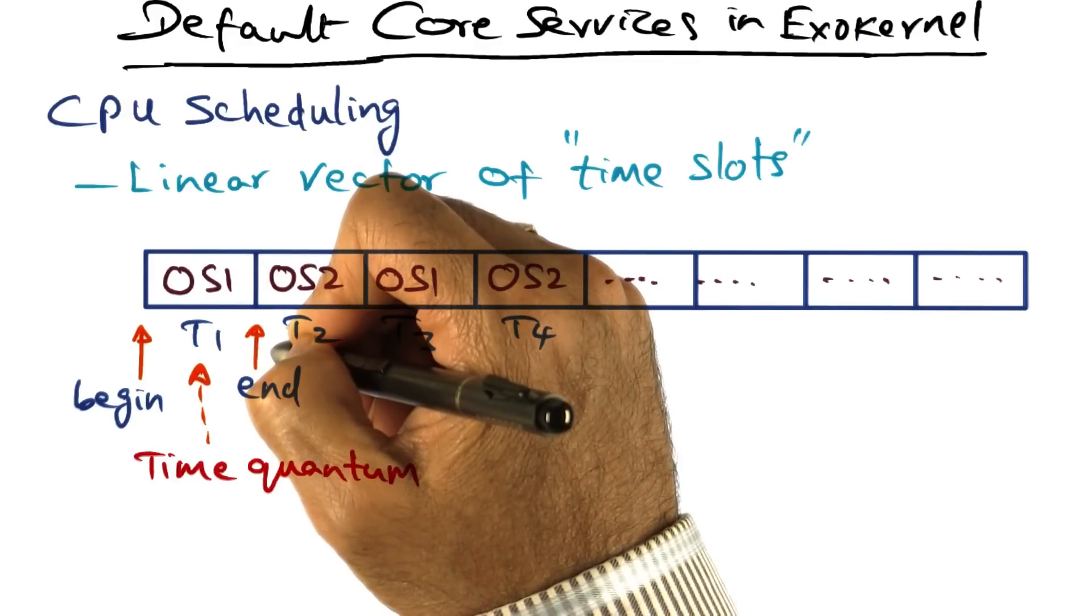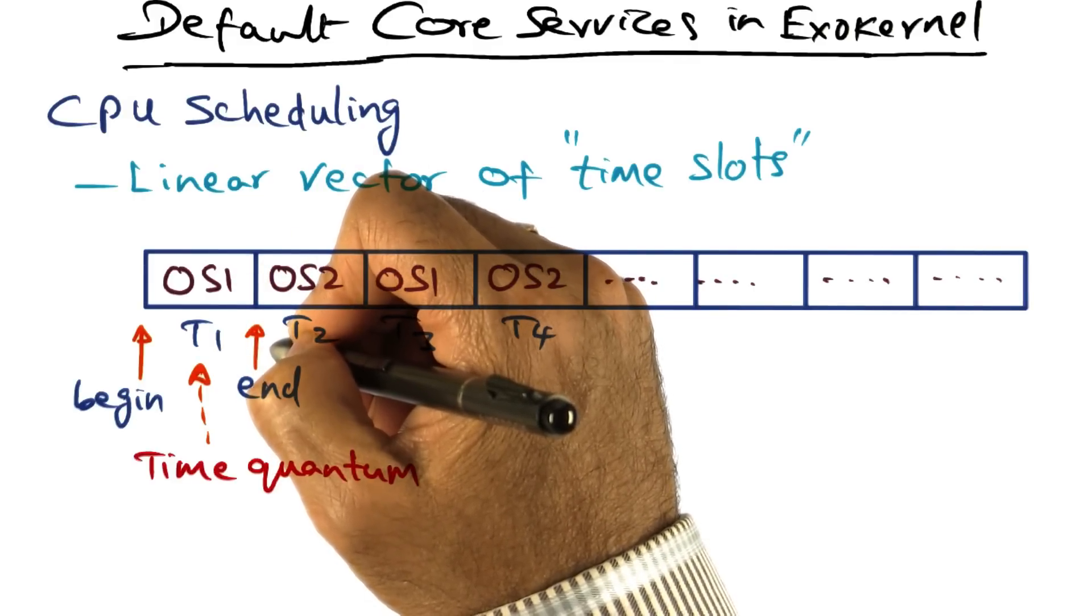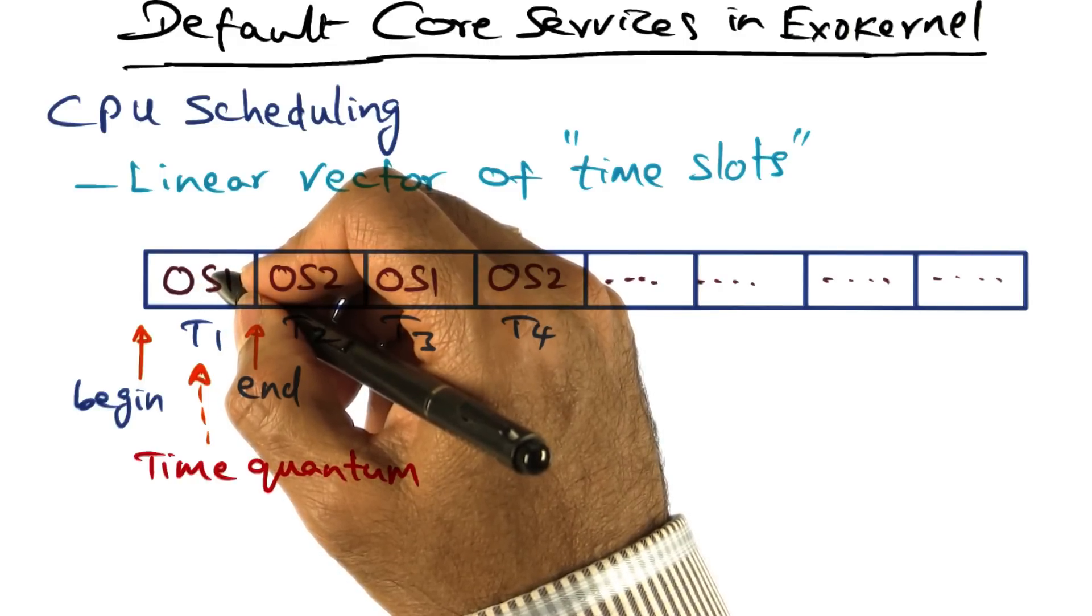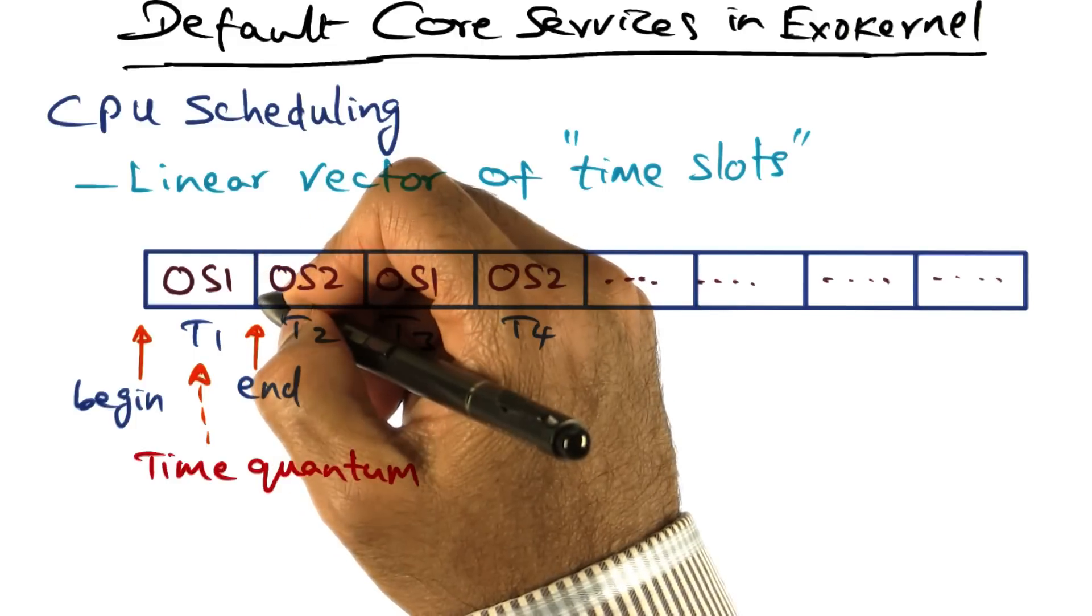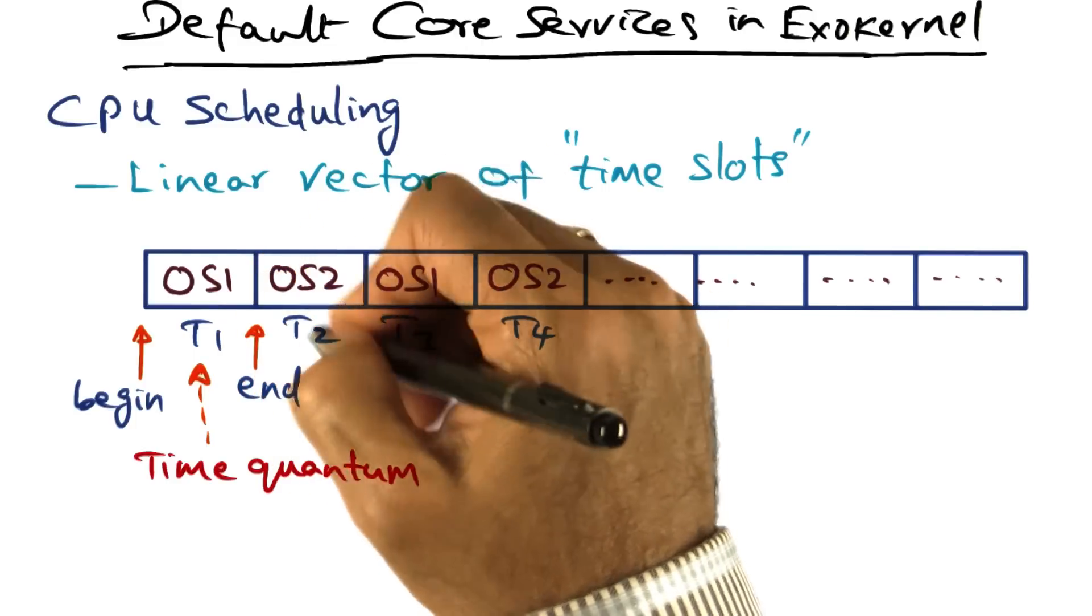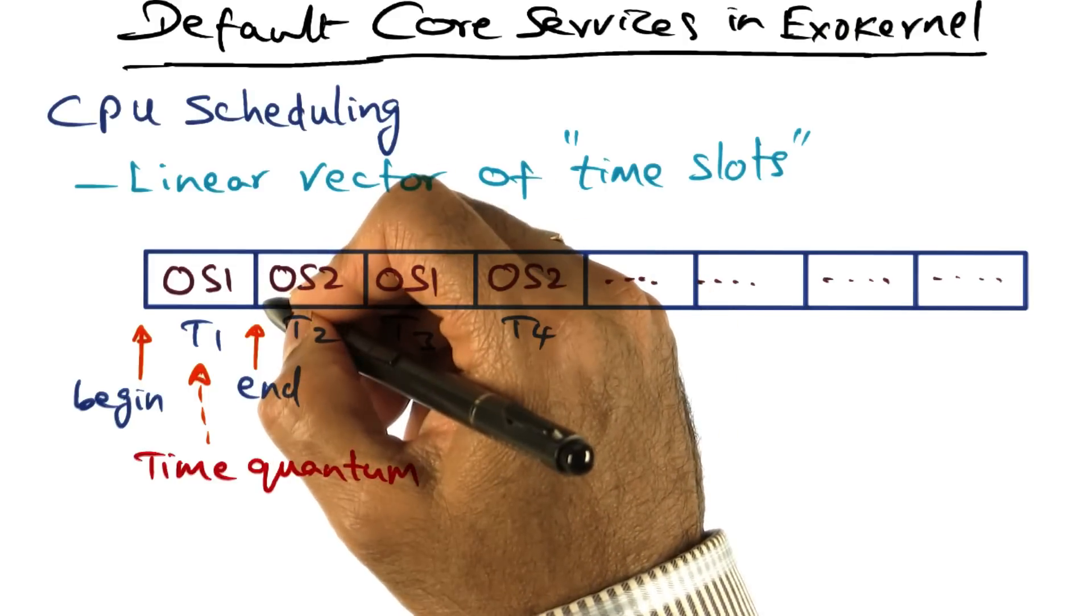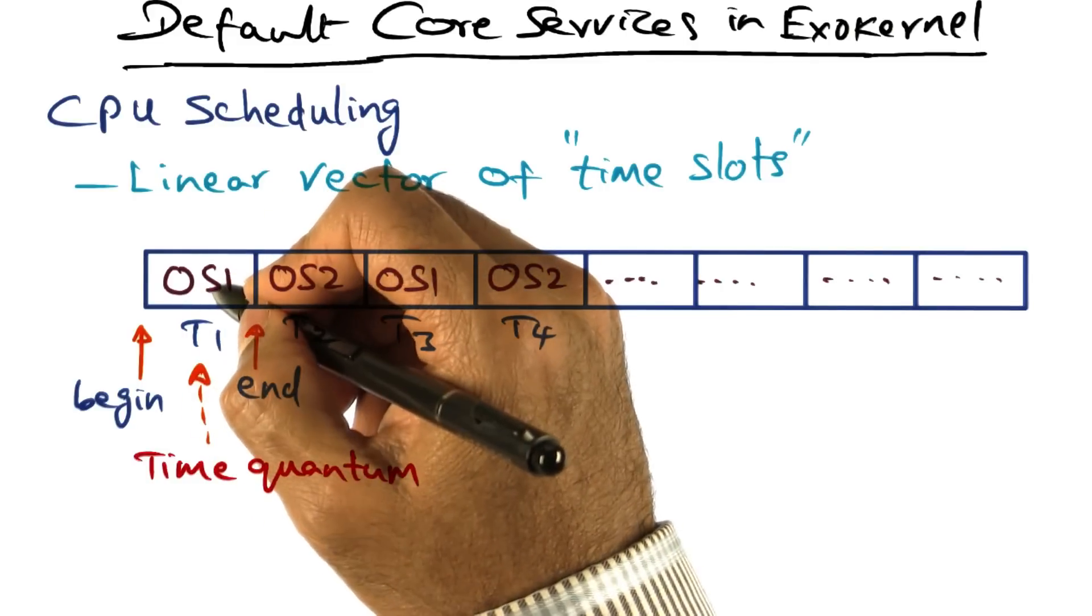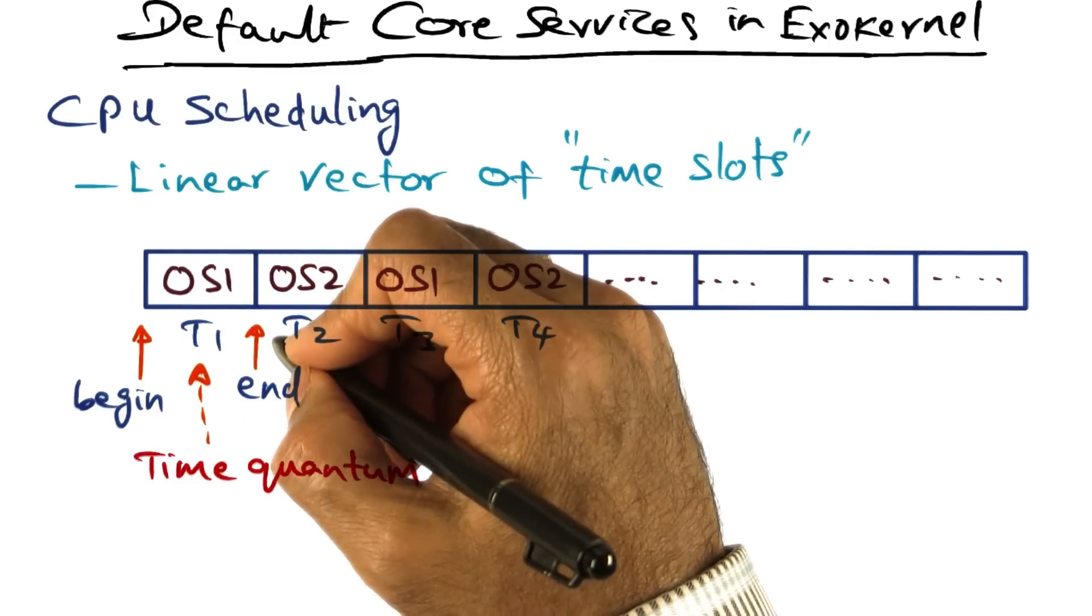At the end of the time quantum, the timer interrupt goes off, exo-kernel fields it and kicks it up to this operating system and tells the operating system to clean up its act, save any context it wants, so that the CPU can be reallocated to the next library operating system. That's where the time is bounded as to how much time the library operating system can take in order to do that saving of the context.